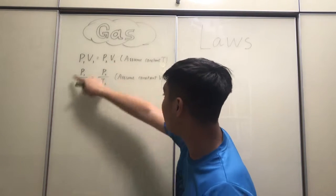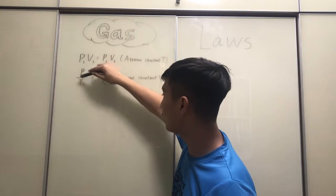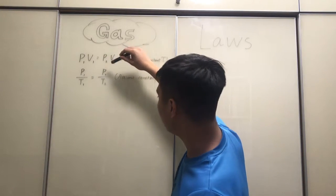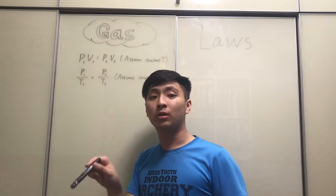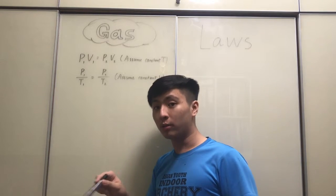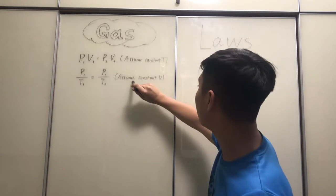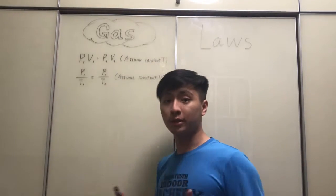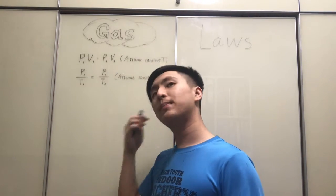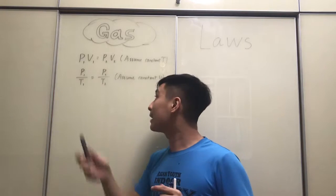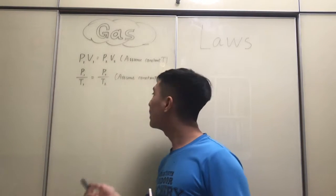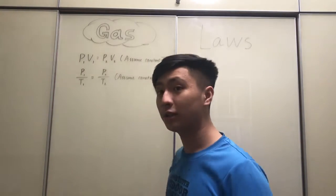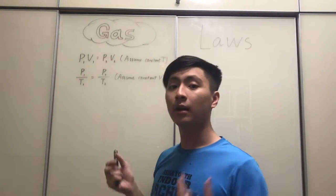You also might recognize this one here, where the pressure of a gas over its temperature is equal to its change in pressure given a change in temperature, or the other way around, assuming a constant value of the volume. These formulae were basically deduced because of scientific experiments, but scientists weren't exactly satisfied in the way these were laid out because they were quite unorganized.